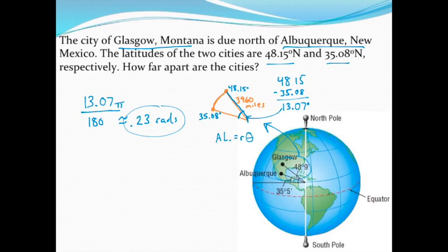Now I have all the information I need to answer this question and figure out how far apart those two cities are. The distance between them would just be the arc length on the surface of the earth, at least approximately. The radius is 3,960 for the radius of the earth, times our radian measurement of 0.23 for the angle between the two cities. Once I do this multiplication, I get a distance of approximately 910.8 miles.